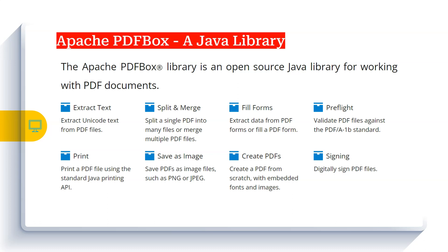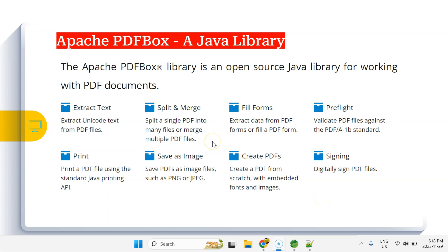Let's quickly talk about the capabilities or features of Apache PDFBox Java library. First of all, it's open source and built in Java. With this library you can extract text, read PDF files, split and merge PDF documents, fill forms, do preflight validation against PDF standards, print, save PDF as image, create PDF, add digital signatures, and apply encryption for security. This library provides many more features available on the official Apache PDFBox portal.